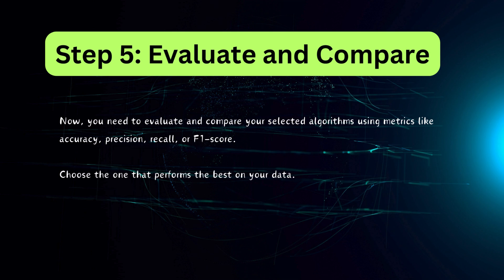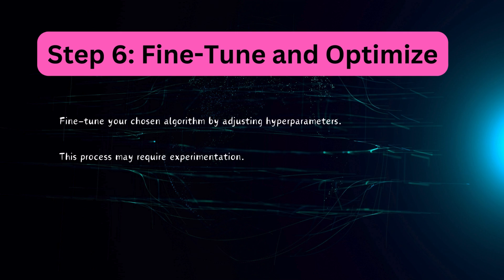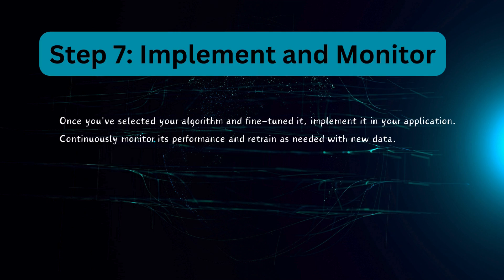Step five: evaluate and compare. Now you need to evaluate and compare your selected algorithms using metrics like accuracy, precision, recall, or F1 score. Choose the one that performs the best on your data. Step six: fine-tune and optimize. You will now fine-tune your chosen algorithm by adjusting hyperparameters. This process may require experimentation.